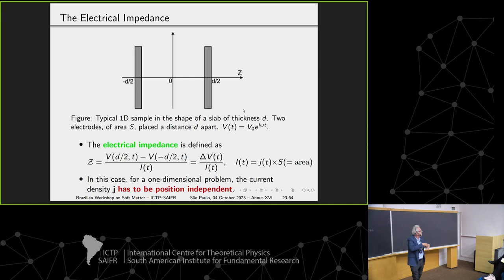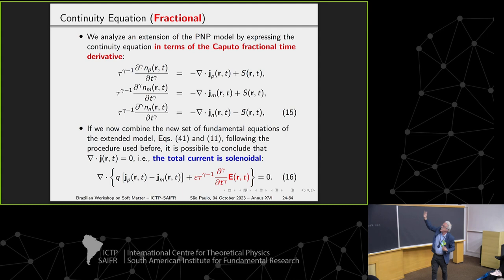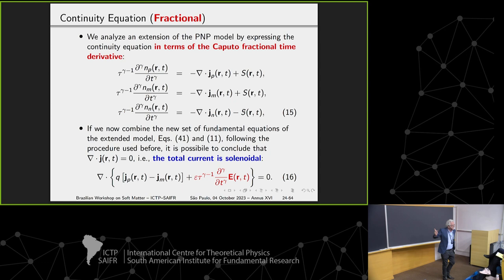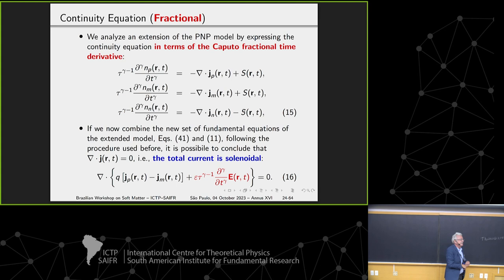Now we move to the fractional field. We introduce, we rewrite the equations in terms of a derivative of order gamma. We show that anyway, if you do this nicely, in a very crude manner we have a problem, a very big problem. The current is solenoidal, but we have modified the displacement current here in the red term. This means the Maxwell equation has to be modified. It's too pretentious to do this.